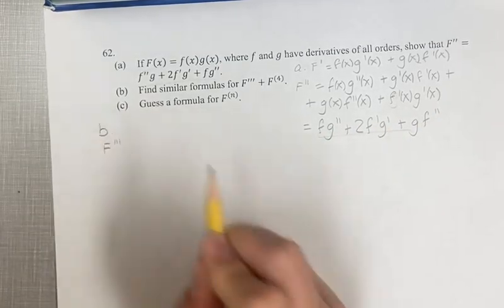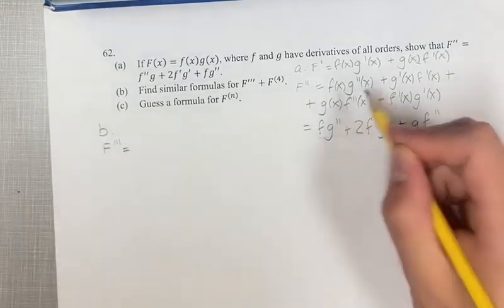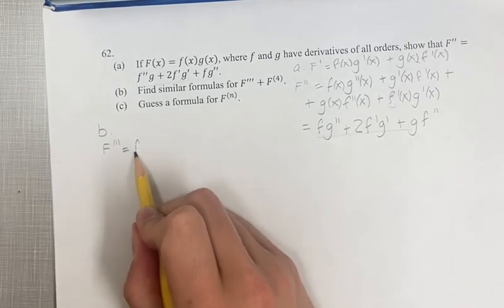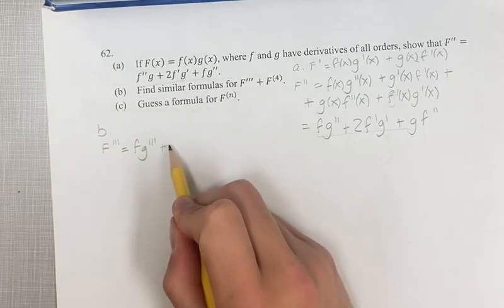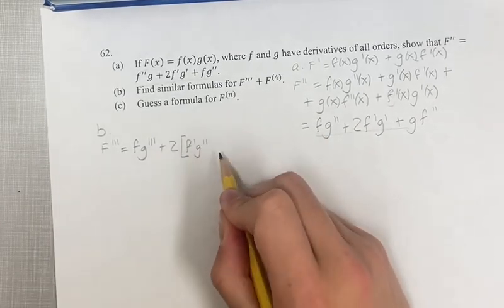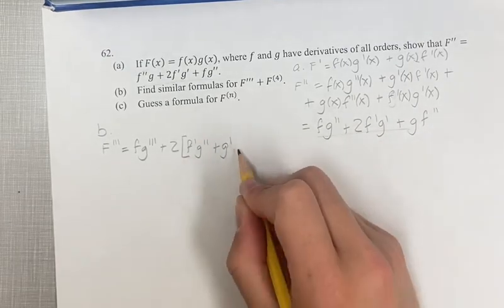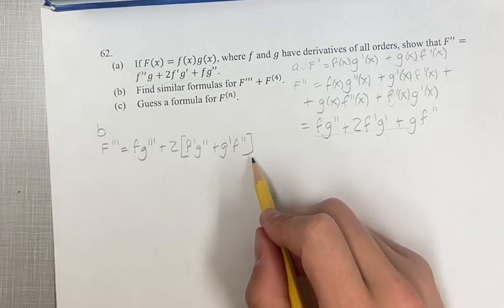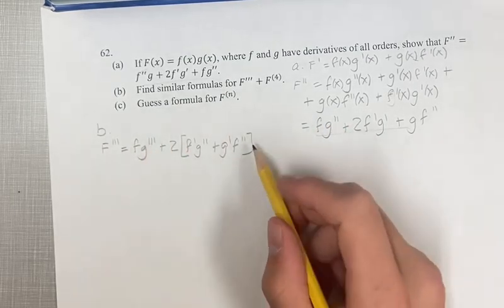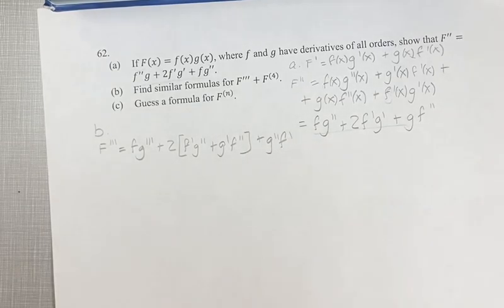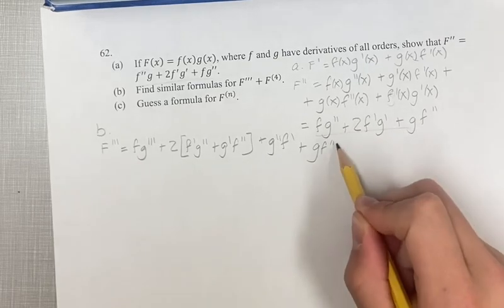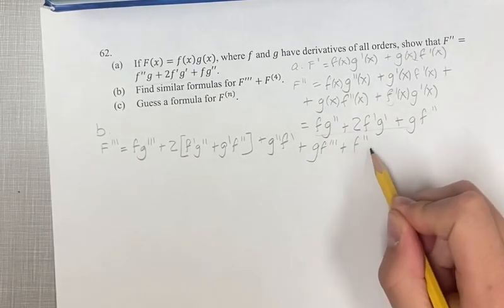So F triple prime is equal to — I'm going to leave out the x's and continue with the form where it's just f double prime instead of f double prime of x. For this first product, we have the first times the derivative of the second, so we're up to triple prime now. For the middle term, we have the first times the derivative of the second plus the second times the derivative of the first. For the last term, we have the first times the derivative of the second, plus the second f double prime times the derivative of the first.